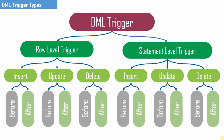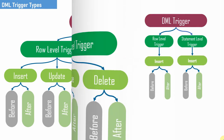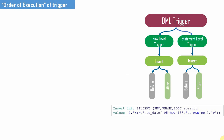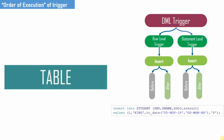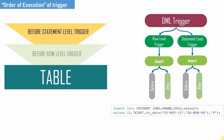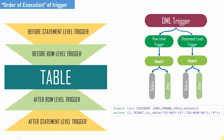We actually have 12 different types of triggers, and it is possible to create all 12 on the same table. After creating all these 12 different types of trigger, we saw an example of the order in which these triggers get fired when a DML operation is performed. For example, if you do an insert statement, there are four insert-related triggers — two for row level and two for statement level. The order is: before statement level, before row level, the actual insert, after row level, and finally after statement level.